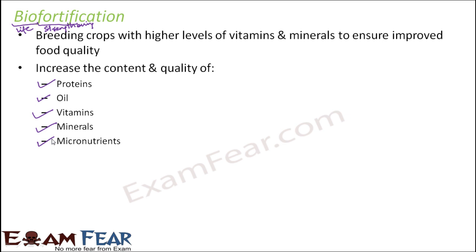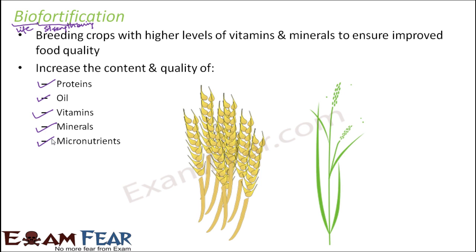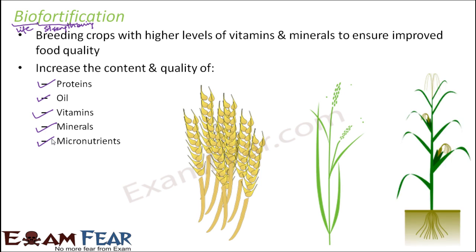Micronutrients are those nutrients needed by the body in small amounts. For example, in wheat, a variety called Atlas 66 has been developed with very high protein content — several times greater than other wheat varieties. In rice, a variety has been developed with iron content almost five times that of existing varieties, and iron is a very important mineral. In maize, new varieties have been developed with very high content of amino acids, which form proteins. This is how different crops with higher nutritional content have been developed through breeding — and this is called biofortification.